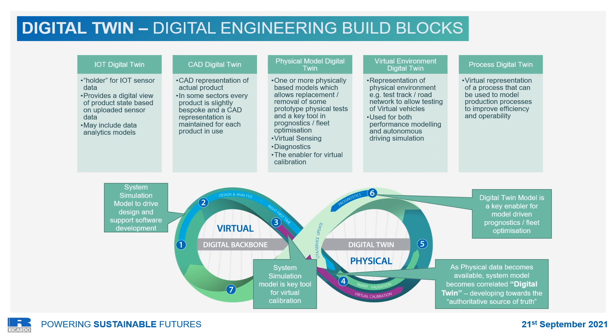The virtual environment digital twin is a representation of the physical environment of the application, allowing for realistic testing conditions of the product. And finally, the process digital twin offers a virtual representation of the production processes with the aim of improving efficiency and operability.